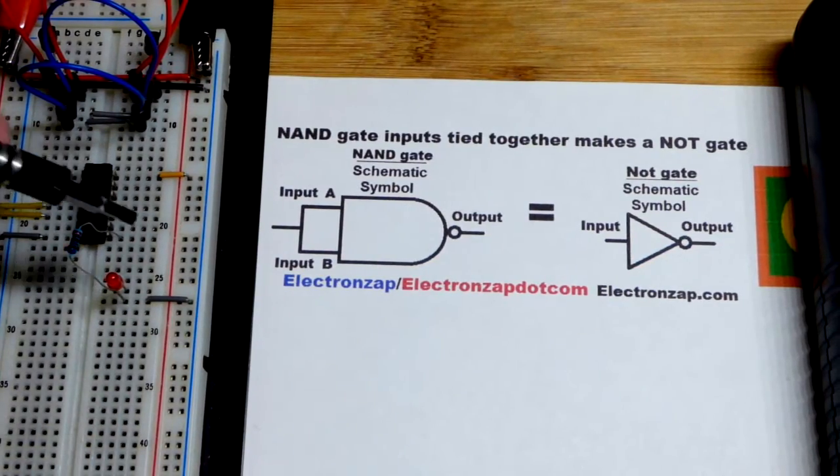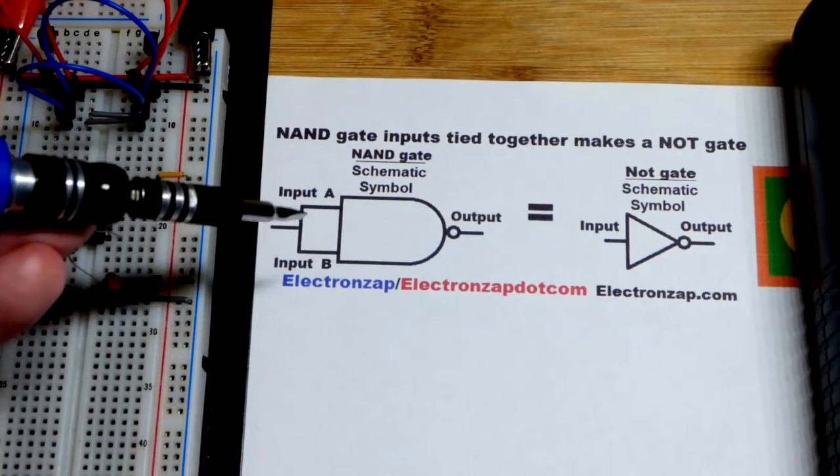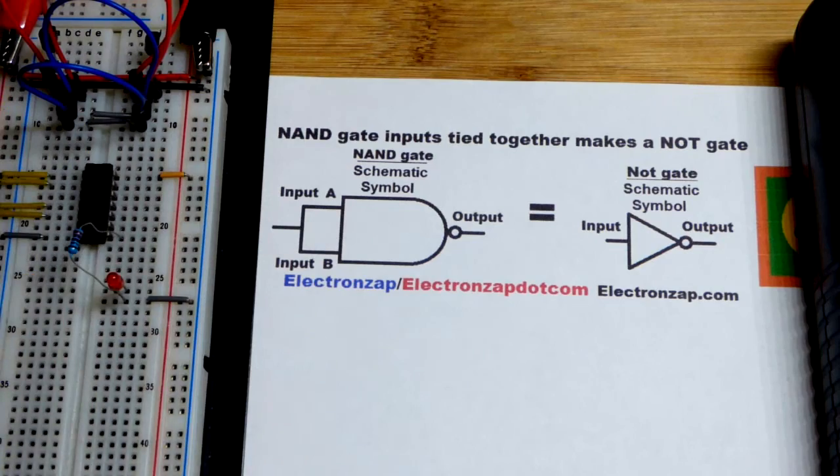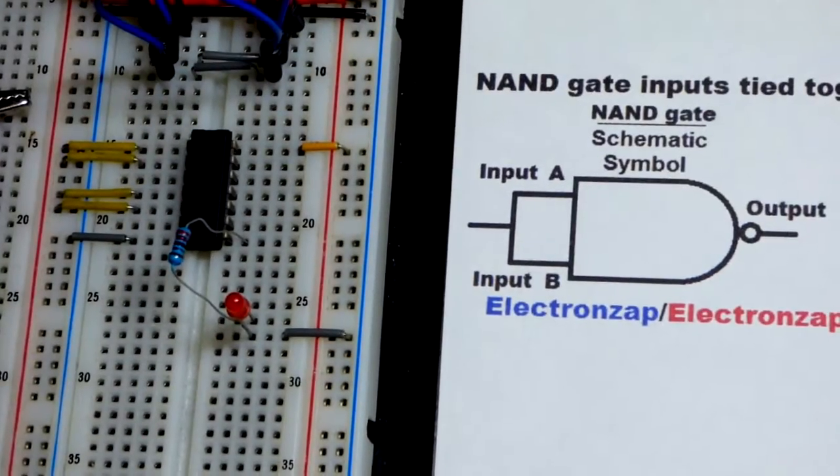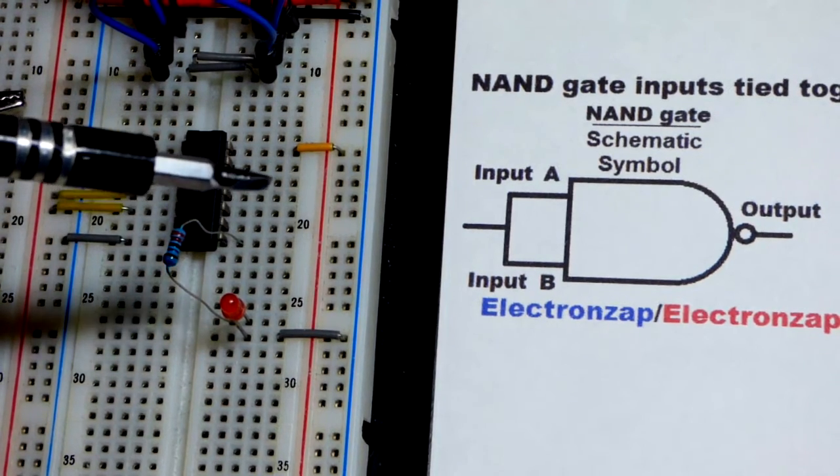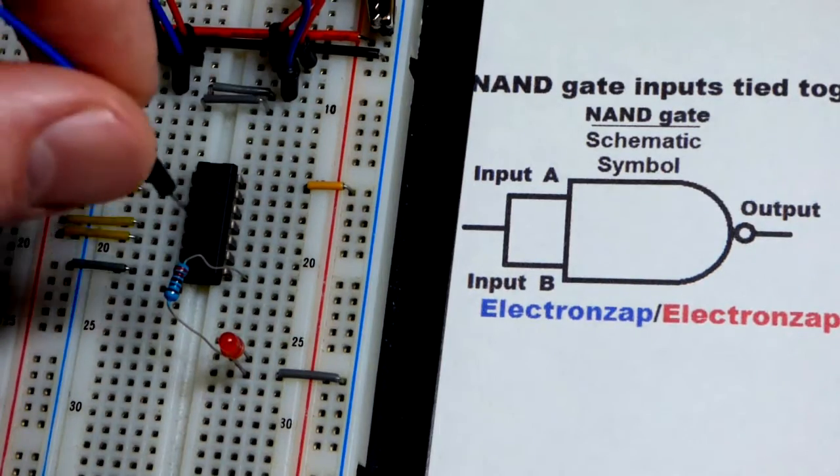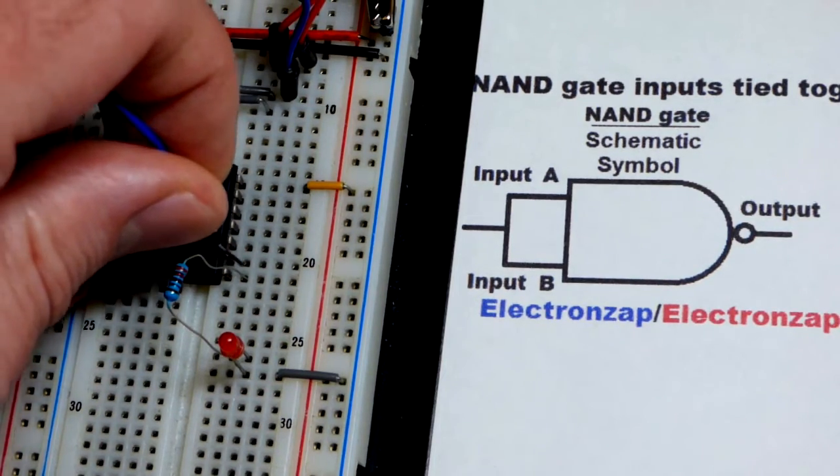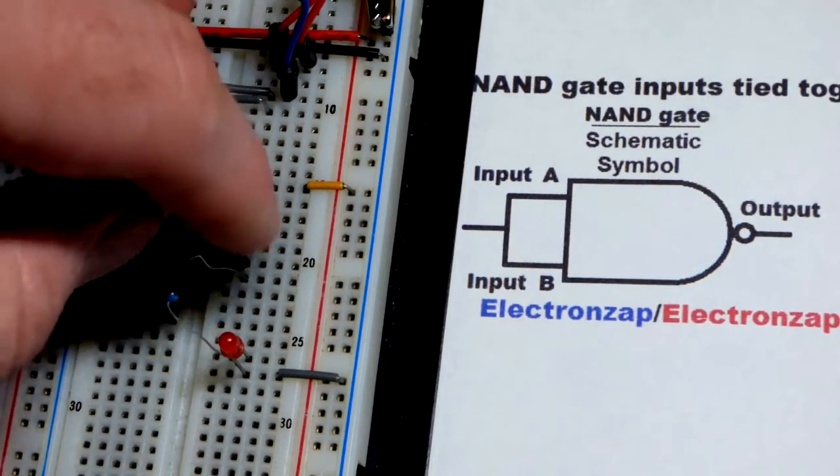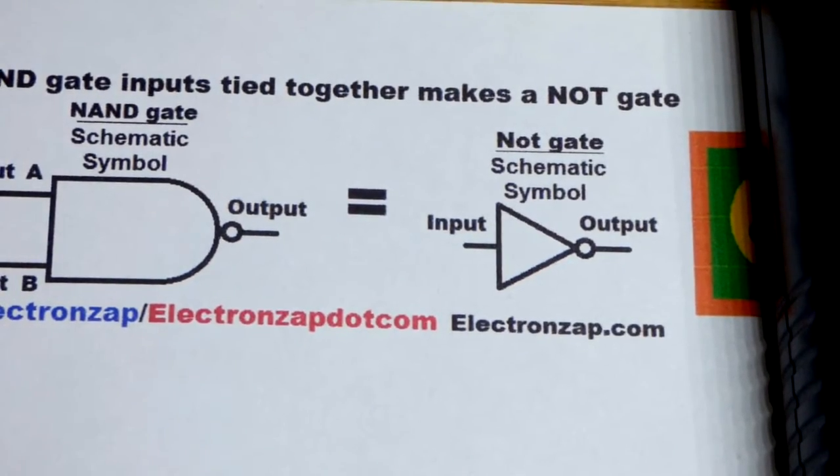So to make this lower NAND gate into a NOT gate, all we have to do is tie its two inputs together and then it will work just like a NOT gate. A NOT gate takes a high input and outputs low, or takes a low input and outputs high. So I'm going to take a blue jumper here, put it from one input directly to the other. Now they are tied together and we turn the NAND gate into a NOT gate.